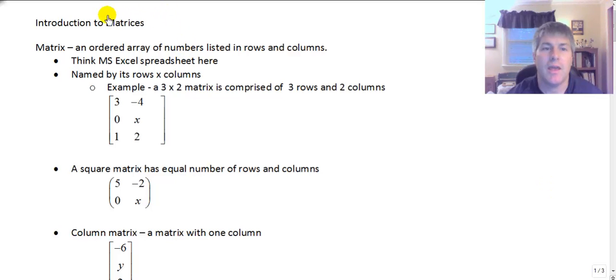By definition a matrix is an ordered array of numbers listed in rows and columns. So think about your Microsoft Excel spreadsheet here. When we did Microsoft Excel we worked with rows and columns and there was something in the cell that was at the intersection of the row and column.